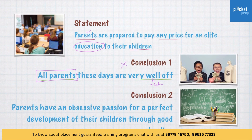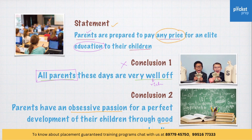Now look at conclusion 2: 'Parents have an obsessive passion for the perfect development of their children through good schooling.' The statement says parents are willing to pay any price for good education, and the conclusion also stresses the same thing — they want perfect development through good schooling. Therefore, this is a valid conclusion.